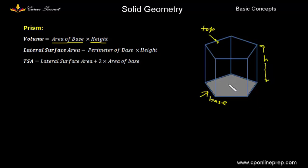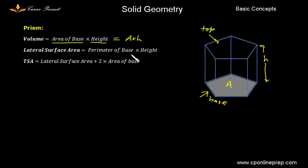Suppose the area of the pentagon is capital A and the height between the base and top is H. Then volume is given as A into H. The lateral surface area is the area surrounding the base and the top — that is the rectangular figures. There are 5 rectangular figures and the formula for lateral surface area is perimeter of the base into height. The total surface area is lateral surface area plus 2 times the area of the base, since we include both base and top.